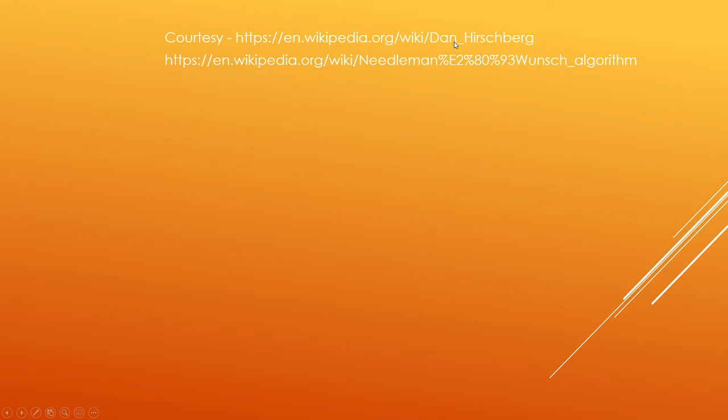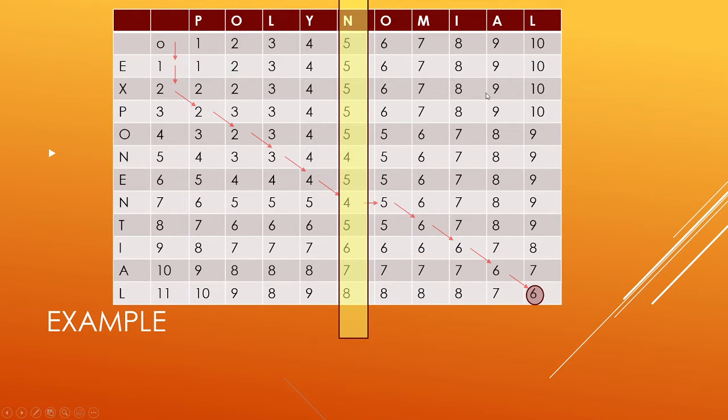And this is the algorithm that provides a better space complexity with matching time complexity than the other algorithm, which is, I think, referred to as Needleman-Wunsch algorithm, which is the basic dynamic programming algorithm with order MN complexity of time and space. Dan Hirschberg algorithm is actually order N space and order MN time. So let's look at the Hirschberg algorithm.